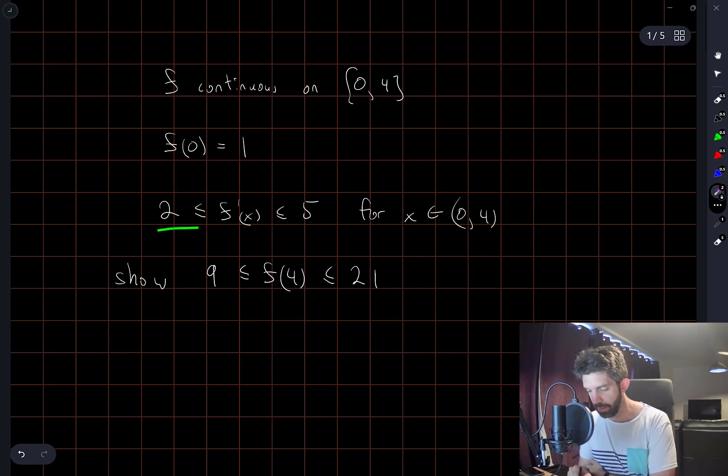And we're given bounds on the rate at which f can grow as x moves from 0 to 4. So the way we're going to get this bound is by imagining that f' is the largest value that it can be.